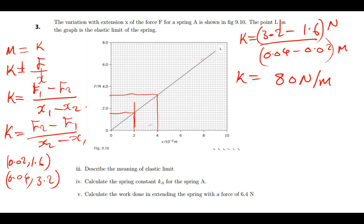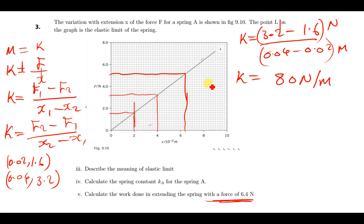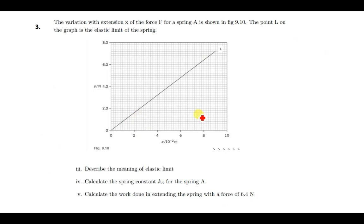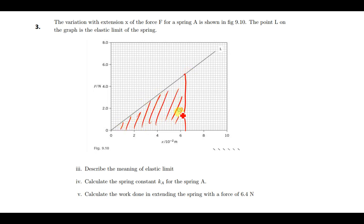We've also been asked to calculate the work done in extending the spring with a force of 6.4 newtons. We go to where 6.4 is on the force axis, draw across to the line, then read off the corresponding extension. The work done is simply equal to the area under the curve. Drawing a line at 6.4 gives us the triangle whose area we need.